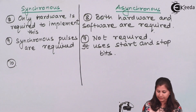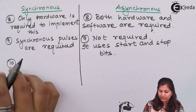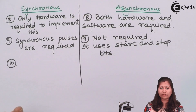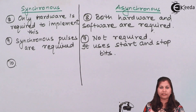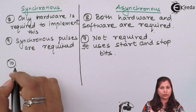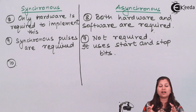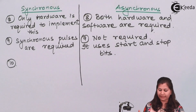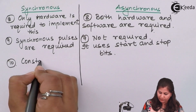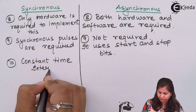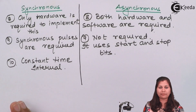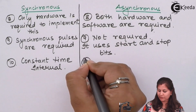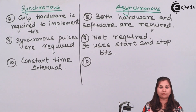The next difference is that in synchronous, constant time intervals are required, because blocks and frames of data are transmitted and the clock pulse is periodic. So synchronous transmission is used in applications where there is a constant time interval between data. Whereas in asynchronous, since one bit is transmitted at a time, it can be used in applications where the time interval is random or irregular.